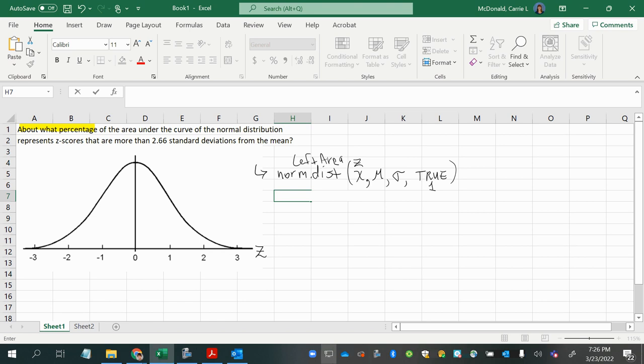About what percentage of the area under the curve of the normal distribution represents z-scores that are more than 2.66 standard deviations from the mean?